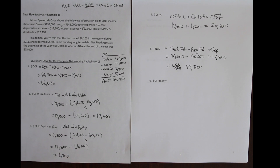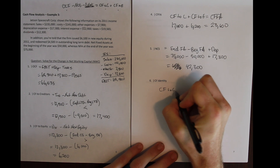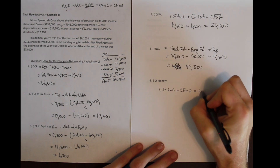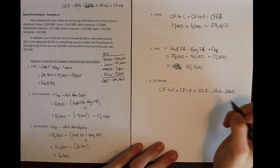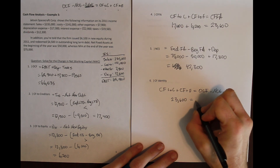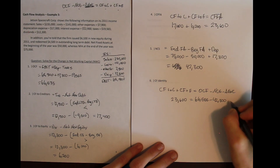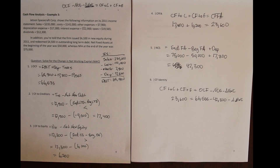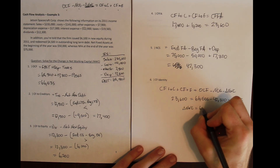Now we can use the identity with all four known pieces to find the change in net working capital. Cash flow to creditors plus cash flow to equity equals $23,600, which must equal operating cash flow of $66,535 minus net capital spending of $42,300 minus the change in net working capital. Rearranging, we get that the change in net working capital must equal $635.